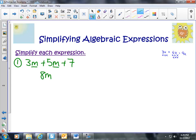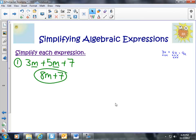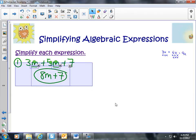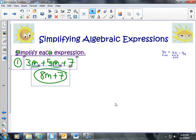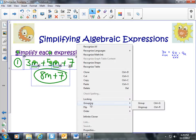Whatever m may be, we have 8 of them, and we plus 7, we add 7. And this is our simplified expression. So 3m plus 5m plus 7 can be simplified to 8m plus 7. It is just that easy.